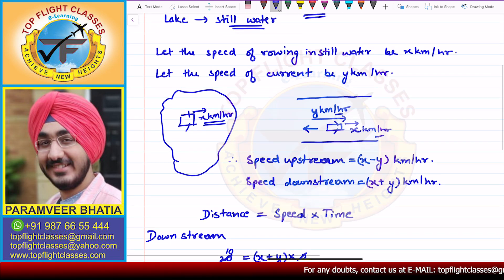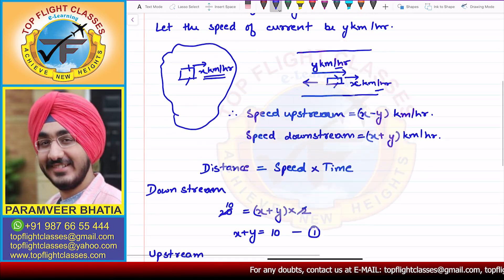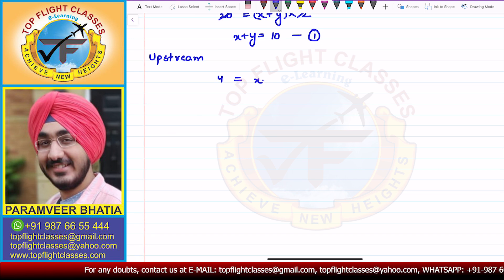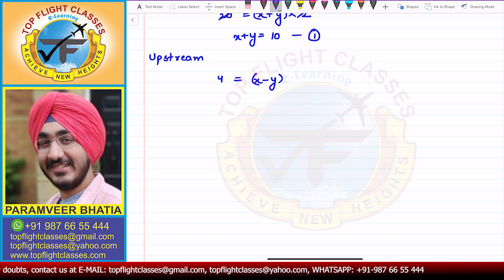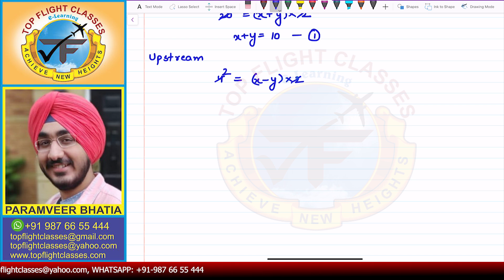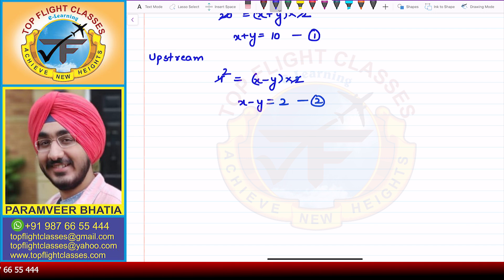Similarly for the upstream case, she can travel four kilometers in two hours. Her speed upstream is x minus y. Applying distance equals speed into time: 4 divided by 2 gives us 2, so x minus y equals 2. This is our second equation.